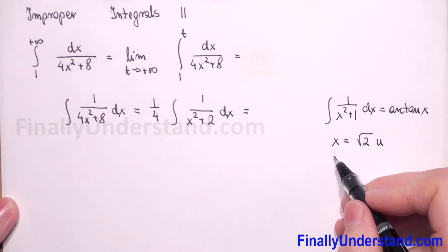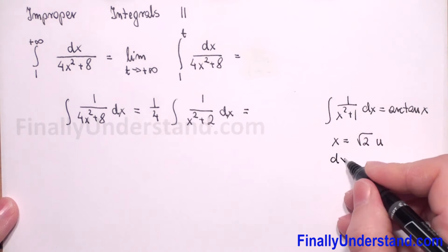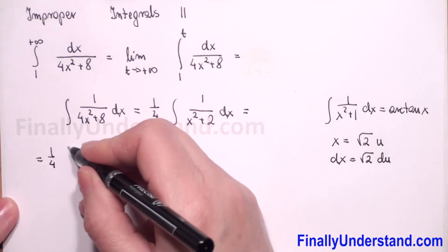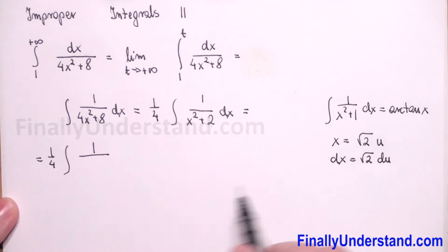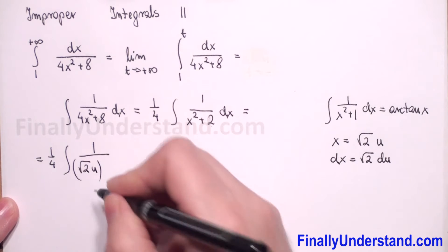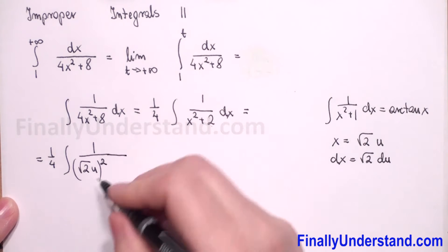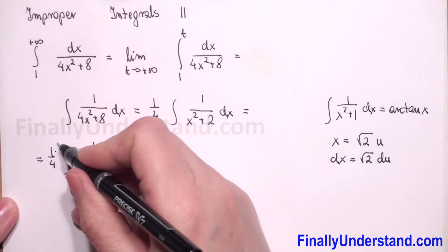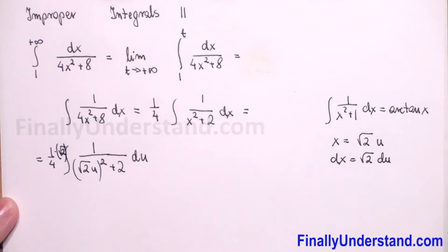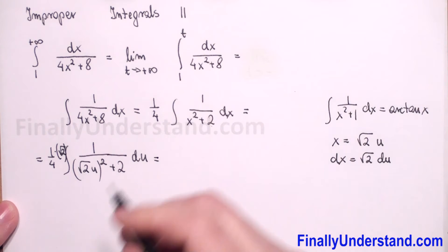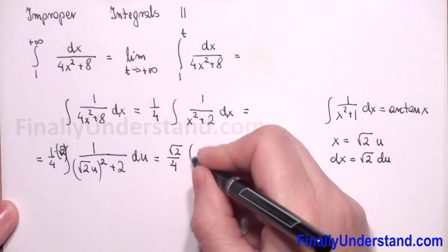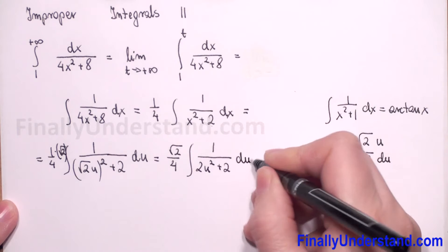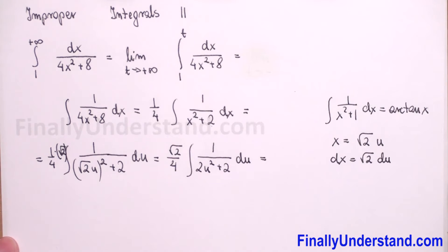We have to find the derivative of both sides with respect to x, so dx equals square root of 2 du. Now substituting into the integral: we have 1 over 4, with x replaced by square root of 2 u, so x squared becomes 2u squared, plus 2, and du with the square root of 2 factor pulled before the integral symbol, giving us square root of 2 over 4 times the integral of 1 over 2u squared plus 2 du.